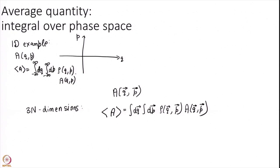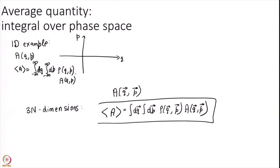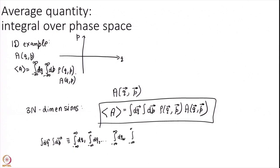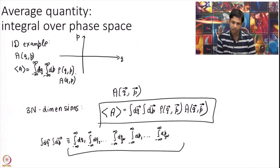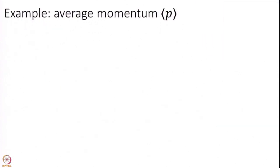In general for 3N dimensions, the average of some quantity A — where A is a function of q, p — is the integral over dq integral over dp of rho(q,p) times A(q,p). The notation integral dq integral dp is shorthand for integrating all coordinates q1 through qN and all momenta p1 through p_3N from minus infinity to plus infinity.